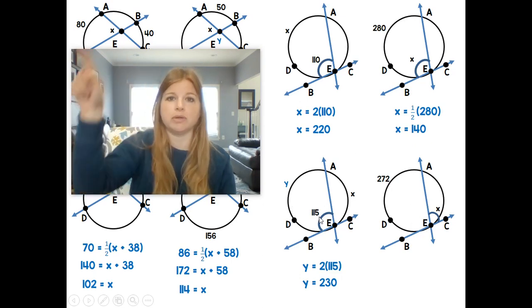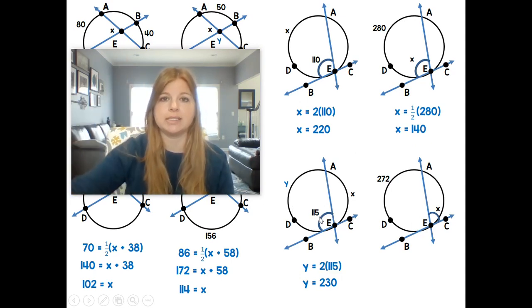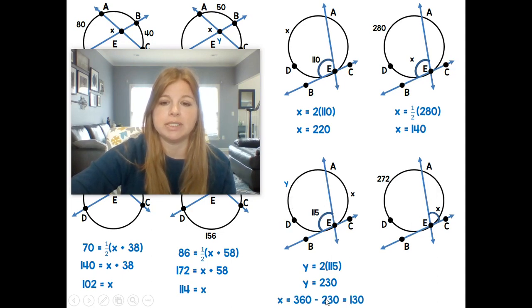Now, what do all of the arcs around a circle add up to? 360. So if I know that this is really 230, then I would do 360 minus 230 to get that arc of 130.